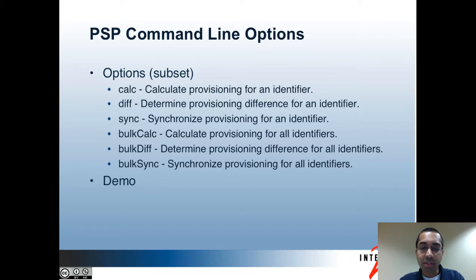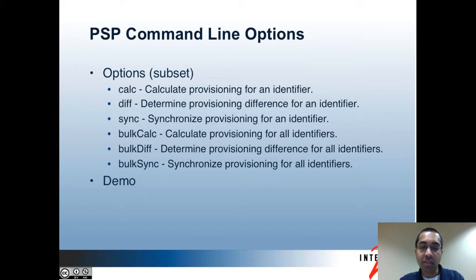The first three options — calc, diff, and sync — work on a specific identifier, for instance a specific group or a folder. If you specify a folder, it would only include that one object and not all children under it. The last three options — bulk calc, bulk diff, and bulk sync — work with all identifiers based on how you have your base stem configured in the LDAP.properties file, along with how you have filters configured in your resolver file.